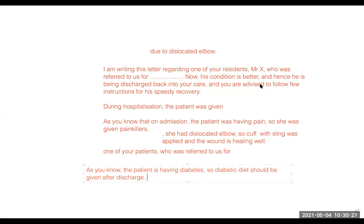Always use the correct line. The third punch can be used either at the first line of the second paragraph — 'as you know, on admission the patient was having pain, so cuff with sling was applied and the wound is healing well' — or you can simply write 'during hospitalization, cuff with sling was applied and the wound is healing well,' and save 'as you know' for the last paragraph covering diabetic diet after discharge.